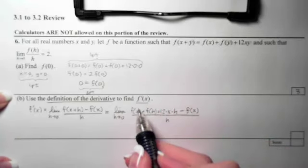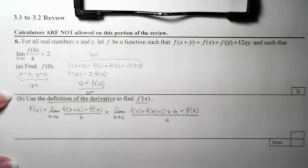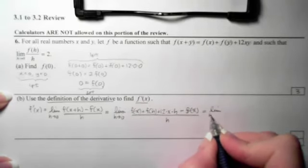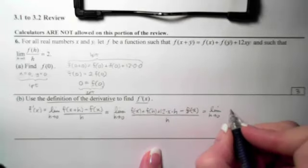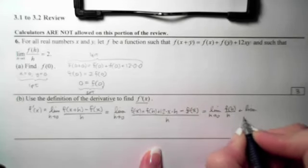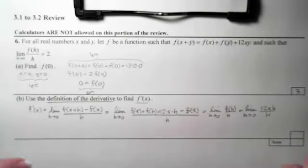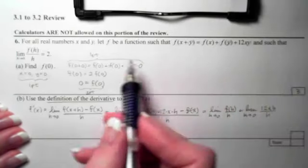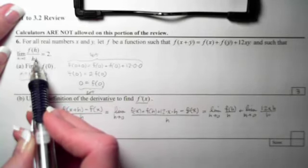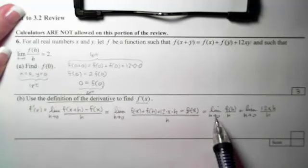Now if I look here, I can see that f of x is here and there's the opposite of f of x here. So I can cancel those two out and that will leave me with the limit as h approaches 0 of f of h over h plus a limit as h approaches 0 of 12xh over h. Now the reason I broke this up is that I had a second piece of information that was given to me up here. And that says the limit as x approaches 0 of f of h over h equals 2.